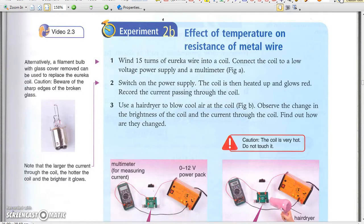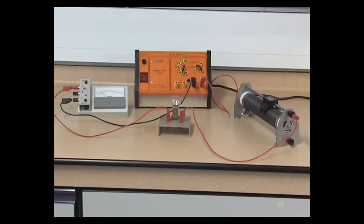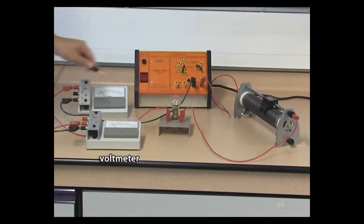The experiment to be effect of temperature on resistance of metal wire. We will investigate the relationship between the voltage across a light bulb and the current flowing through it. First, connect a light bulb in series with a rheostat, a power pack and an ammeter. Then connect a voltmeter across the bulb.